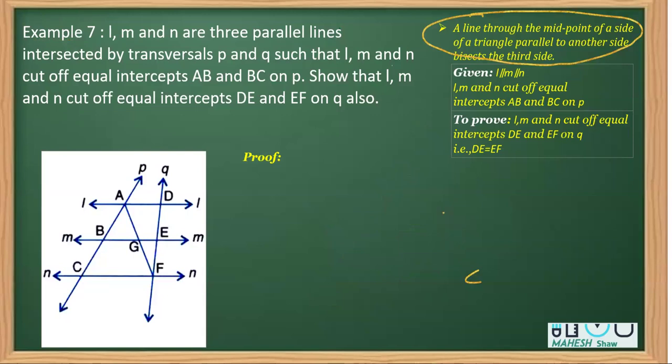Let's see how we are going to use this converse of midpoint in proving this question. We can see that we are given three parallel lines, that is L, M, N are three parallel lines. This is parallel to this, is parallel to this.